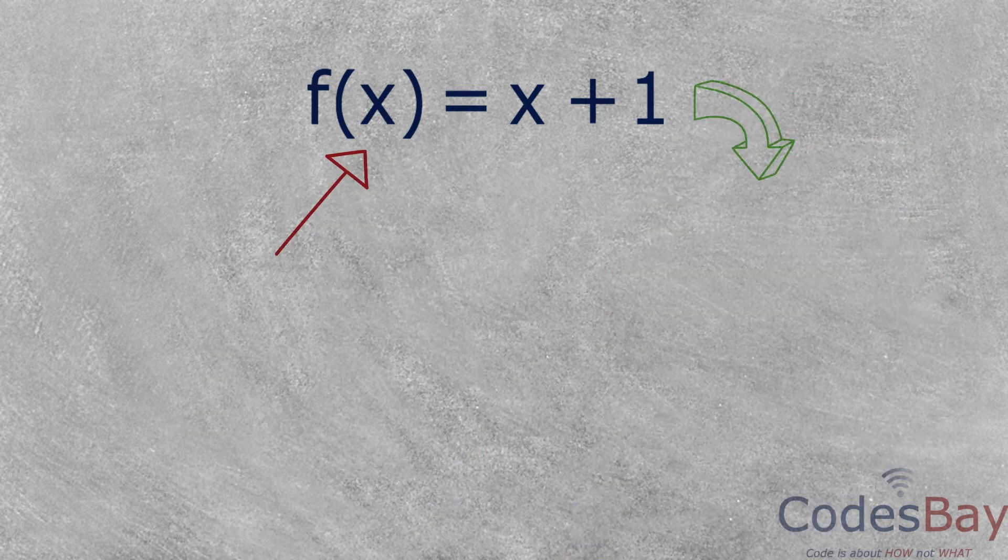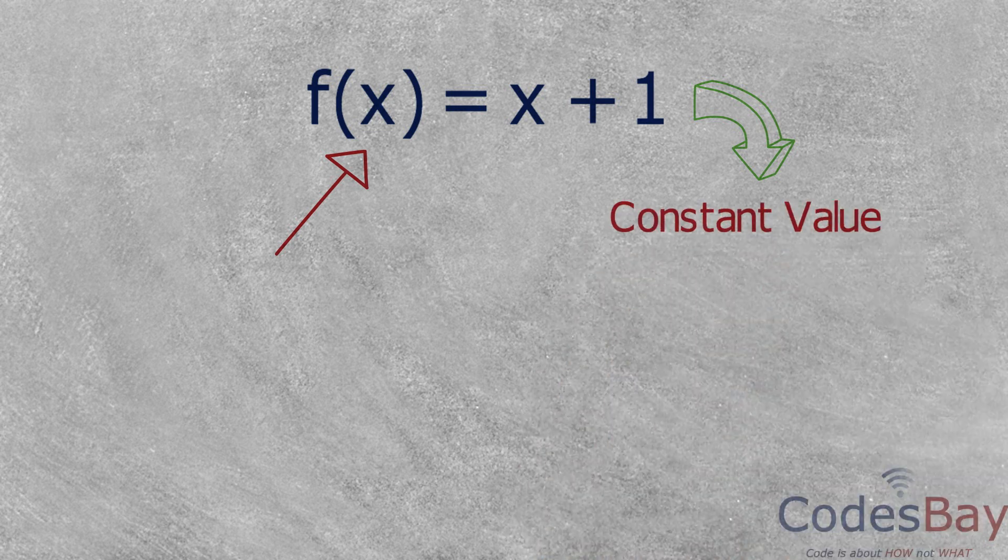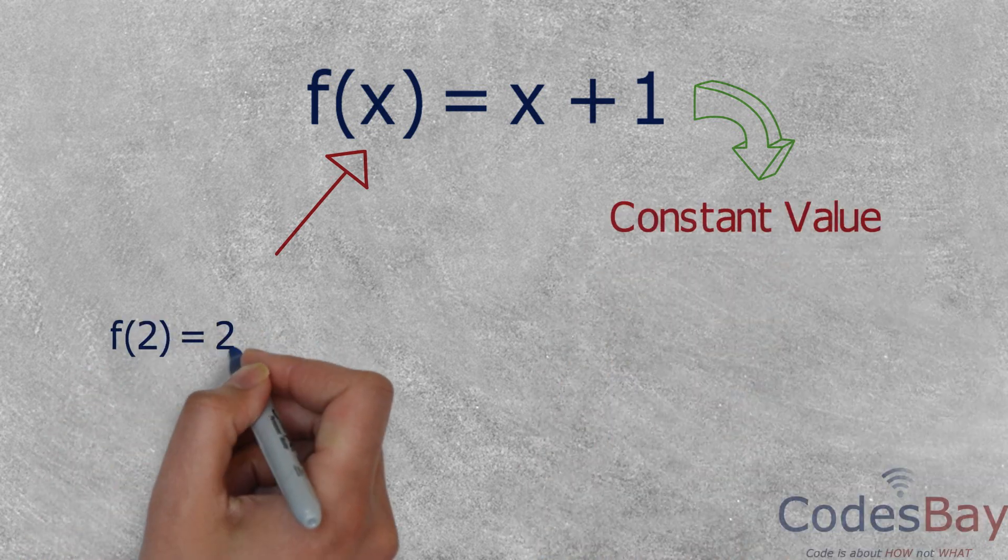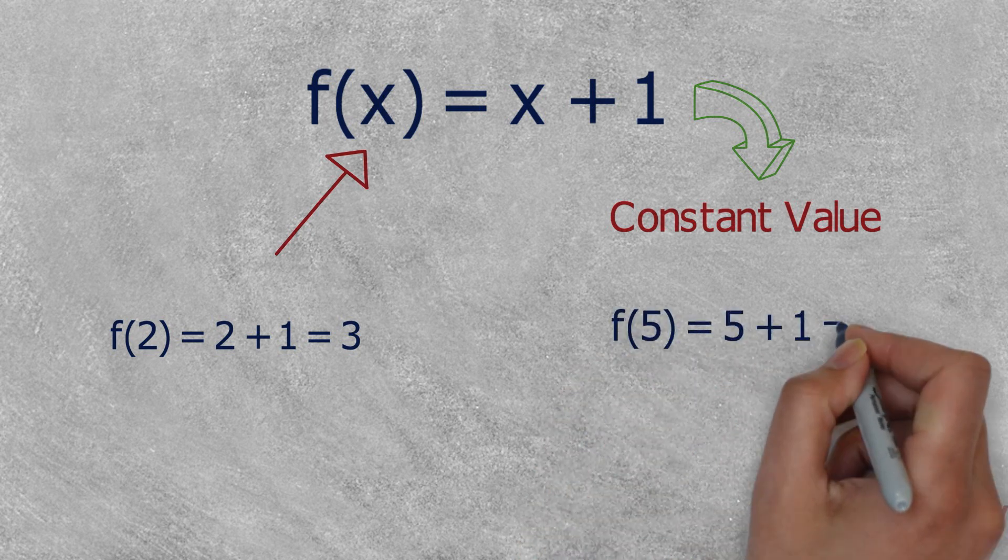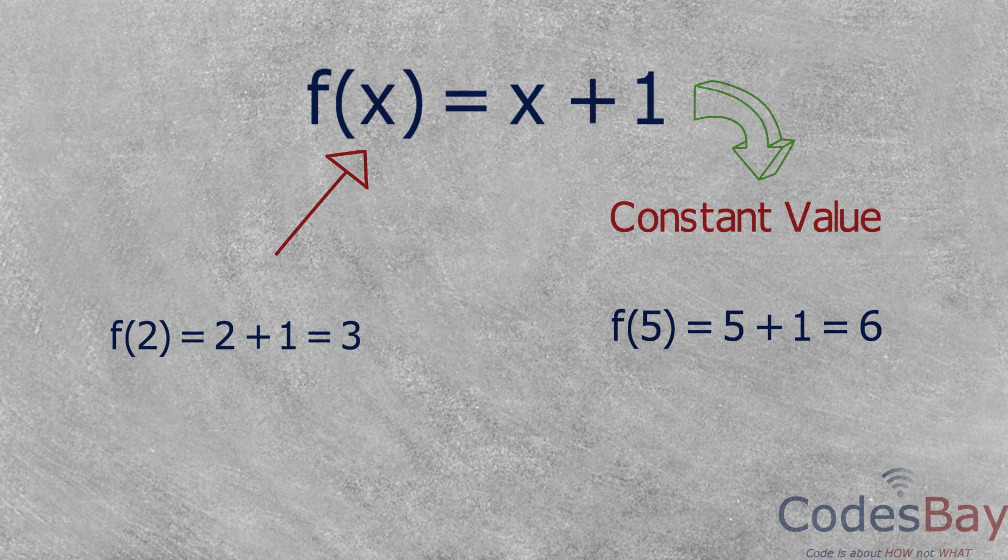the output of x + 1 will always be constant. For example, if we pass x as 2, 2 + 1 will always be 3. If we pass x as 5, 5 + 1 will always be 6.